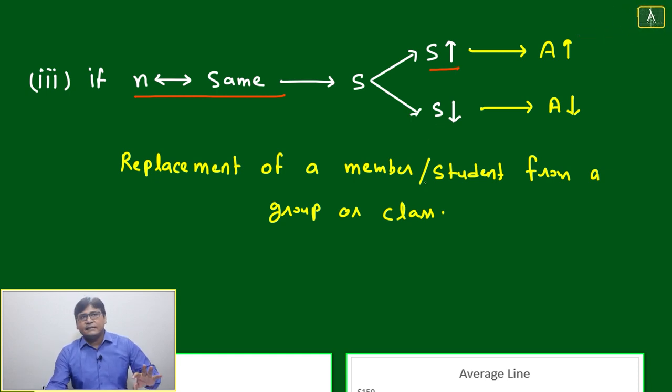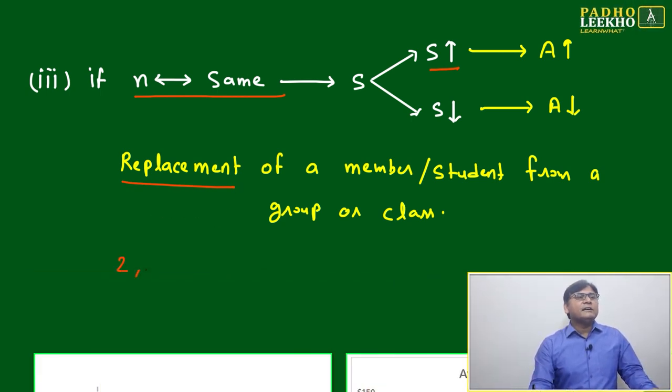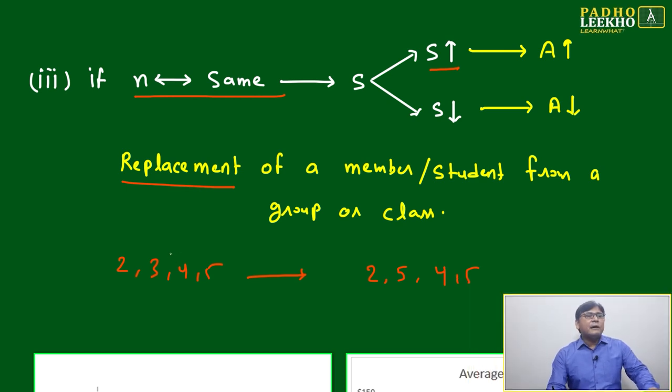Or s is decreasing. How will this be possible? It will only be possible if you are doing the replacement of any data. Like earlier your data was 2, 3, 4, 5. Now n is not changing, but you are just making the data 2, 5, 4, 5. You have replaced three with five.